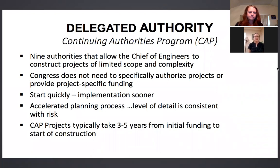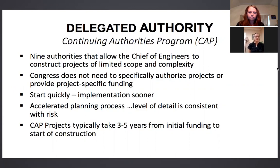There are nine specific authorities that Congress has provided to the Chief of Engineers to make decisions without requiring specific congressional approval. These can start more quickly, and typically the planning and study process is more accelerated compared to large-scale projects requiring congressional approval. They can take three to five years from initial funding to the start of construction, and we're working on accelerating that even more to get things in the ground quickly.